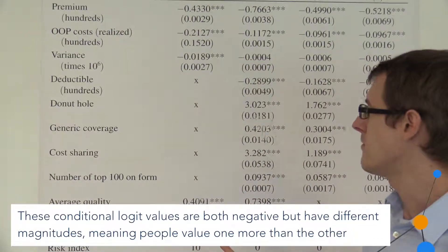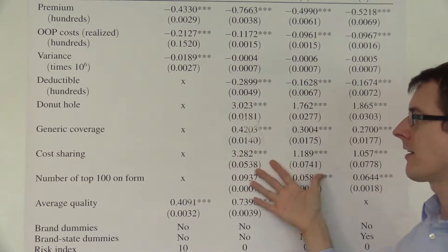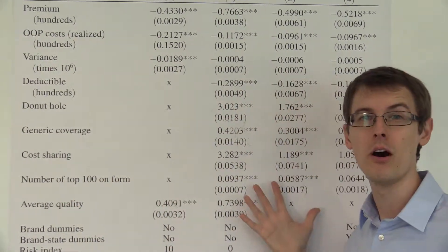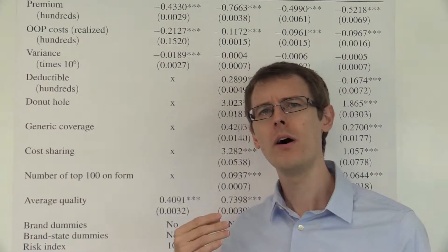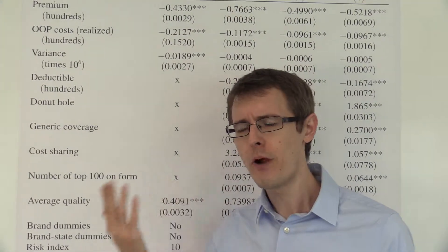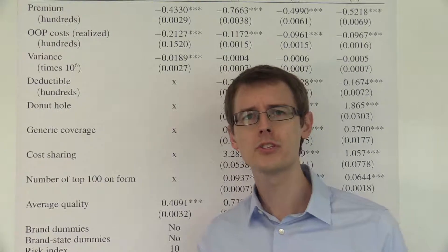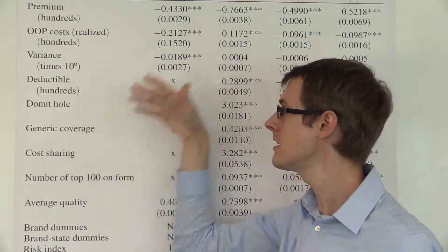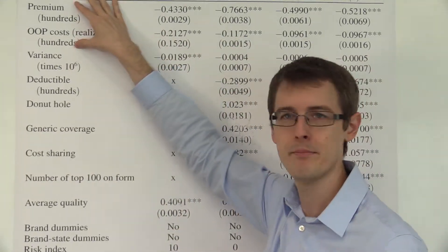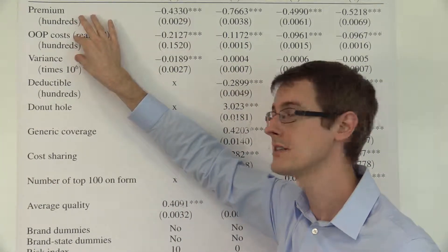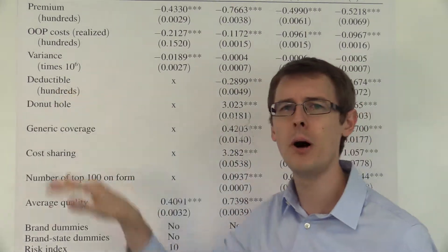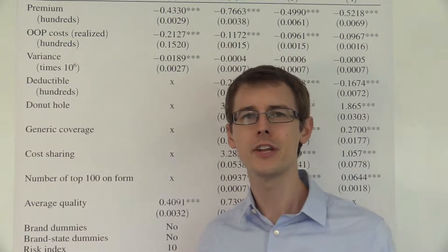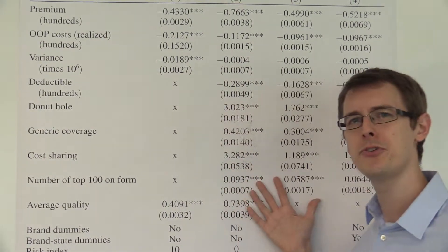The second main finding is that these coefficients here, for all these other financial characteristics, are not zero. So why would we want them to be zero? Well, again, a sort of rational person would just pick the lowest cost. So given that we've already included total cost in our specification here, because we've got premium and out-of-pocket costs, why should I care about deductible above and beyond how much I'm already paying for the plan? I shouldn't. A rational person shouldn't. And yet people do.